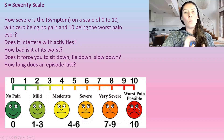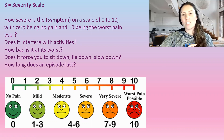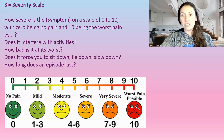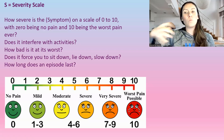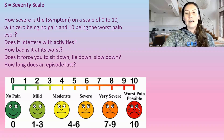S stands for severity. On a scale of zero to ten — zero being no pain, ten being the worst pain — have the patient rate it. You can assess severity for pain, depression, dizziness, or any symptom. Ask: does it interfere with activities? How bad is it at its worst? Does it fluctuate — what's the worst and best they've felt? Does it force them to sit, lay down, or slow down? Does it interfere with activities of daily living? How long does an episode last — is it constant or intermittent?